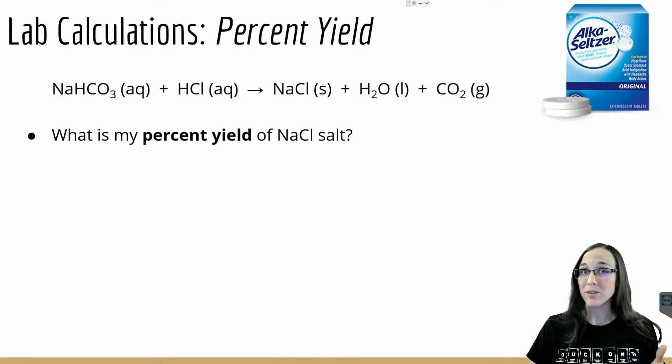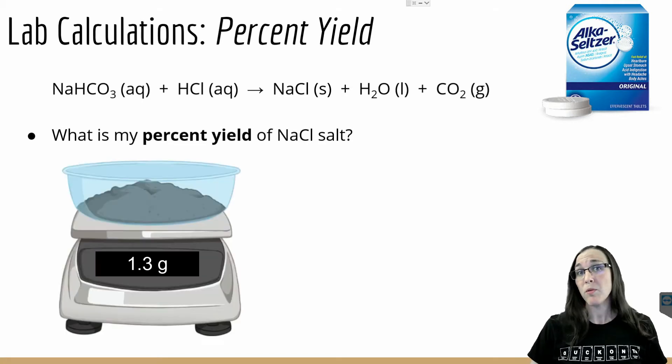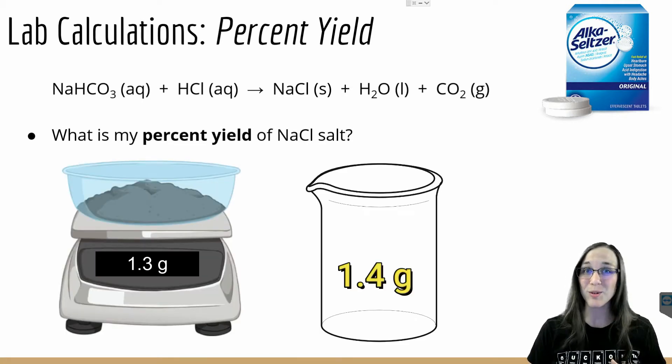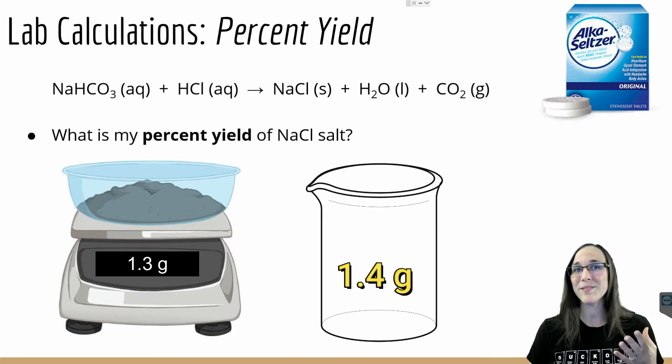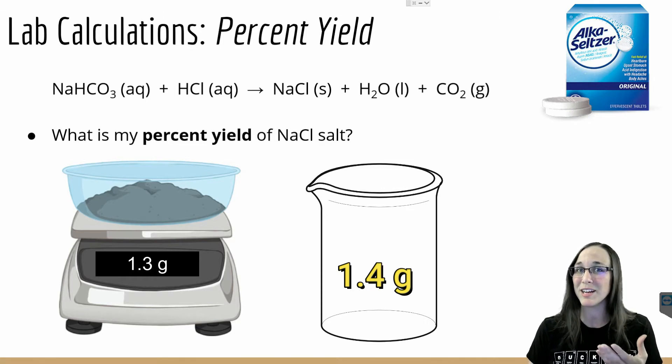So now that we know that the baking soda was the limiting reactant and we could theoretically make a maximum of 1.39 grams of table salt NaCl in the weigh boat, or 1.4 grams of salt according to the beaker, if I took my initial mass of the beaker which was 54.1 grams and my final mass was 55.5 grams, subtracting those two I end up with 1.4 grams of salt that was in the beaker.